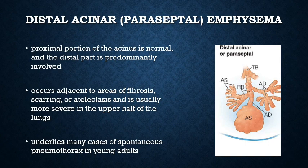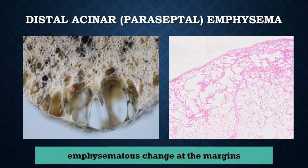Distal acinar emphysema, also called paraceptal emphysema, has a normal proximal portion of the acinus while the distal part is predominantly involved. Emphysema is more striking adjacent to the pleura, along the lobular connective tissue septa, and at the margins of the lobules. It occurs adjacent to areas of fibrosis, scarring, or atelectasis, and is usually more severe in the upper half of the lungs. This type probably underlies many cases of spontaneous pneumothorax in young adults. The emphysematous changes are located at the edge of the lung tissue, corresponding to the septum.